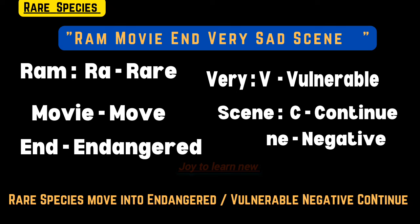Next topic is rare species. The shortcut is: 'Ram movie end very sad scene.' RA stands for rare, move denotes move, end stands for endangered, very — V represents vulnerable. That is, rare species move into endangered or vulnerable categories. Seen — C stands for continue, NE stands for negative — meaning rare species move into endangered or vulnerable categories when negative factors continue to affect them.